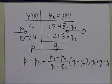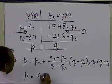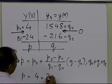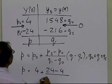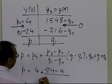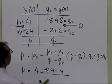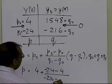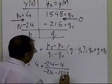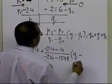and if I'm going to write p in terms of q, what I'm going to get, p is p0, which is 4, plus p1 minus p0, which is minus 24 minus 4, divided by q1 which is minus 216 minus q0 which is 1548, times q minus q0, which is 1548.